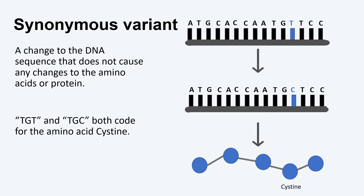A variant that changes a letter in our DNA but does not change the amino acid is called a synonymous variant. A good way to remember what a synonymous variant is, is to think of the word synonym. Synonyms are different words or phrases that have the same meaning, which is similar to a synonymous variant because they are different letters but they code for the same amino acid.